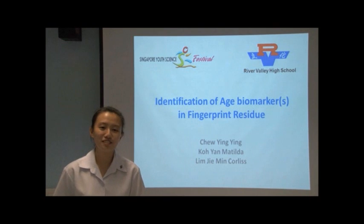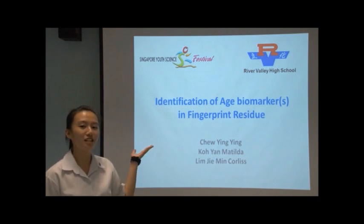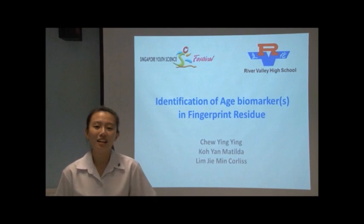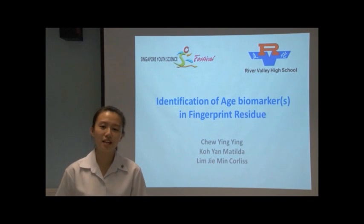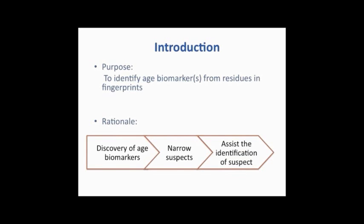We are from Real Valley High School and our project is on the identification of biomarker markers in fingerprint residues. This project is done by Chu Ying Ying, Koyan Matilda, and Lim Jeming Collies. Our project sets out to identify biomarkers in fingerprint residues, since in-depth research in this area is still lacking.